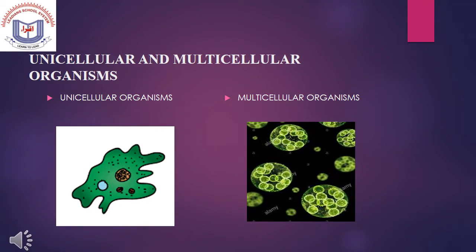Unicellular and Multicellular Organisms: Unicellular organisms are made up of only one cell that carries out all of the functions needed by the organism. Multicellular organisms are composed of more than one cell, with groups of cells differentiating to take on specialized functions.